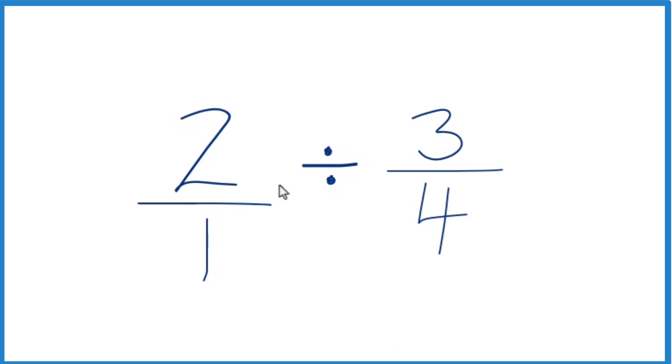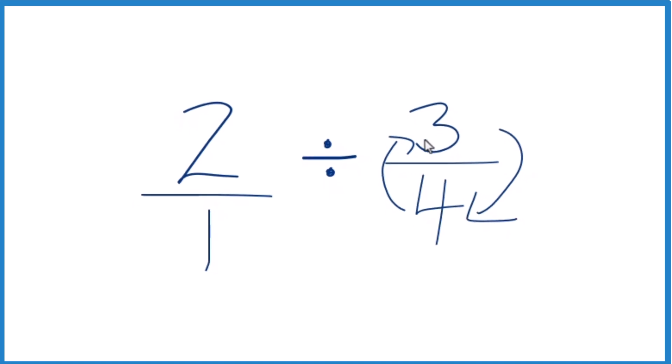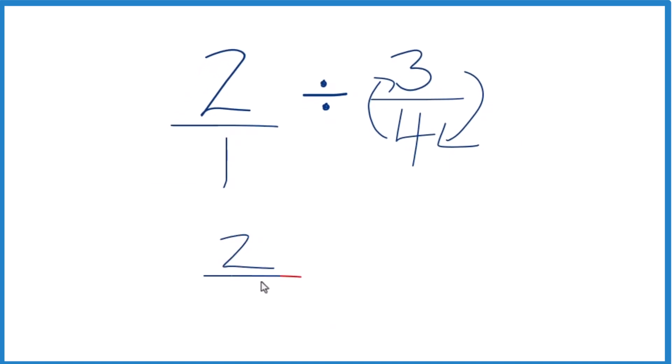So now what we can do when we divide fractions, like 2 by 3 fourths, we can change this to multiplication if we take the reciprocal of 3 fourths. So we move the 4 to the top and then the 3 down to the bottom. So we end up with 2 over 1 times 4 over 3.